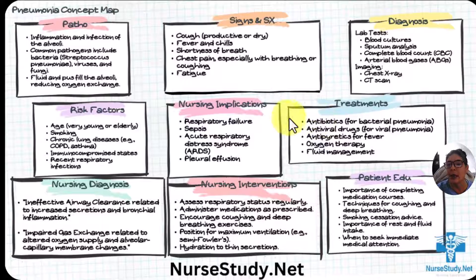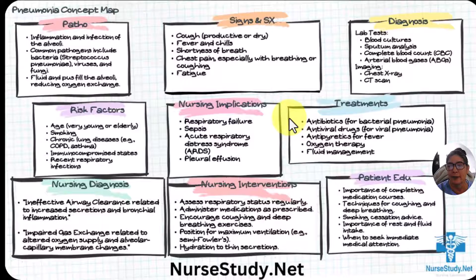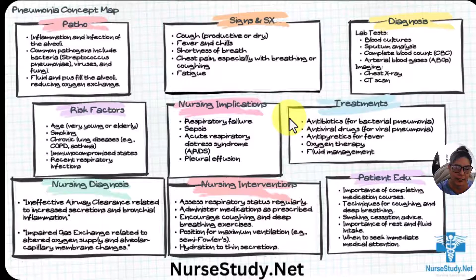Treatments include antibiotics for bacterial pneumonia, antivirals for viral pneumonias, antipyretics for the fever, oxygen therapy, and fluid management. If you give fluids, a lot of times you can thin the secretions — just make sure they're not on any kind of fluid restrictions, so check their diet orders and any restrictions they may have.